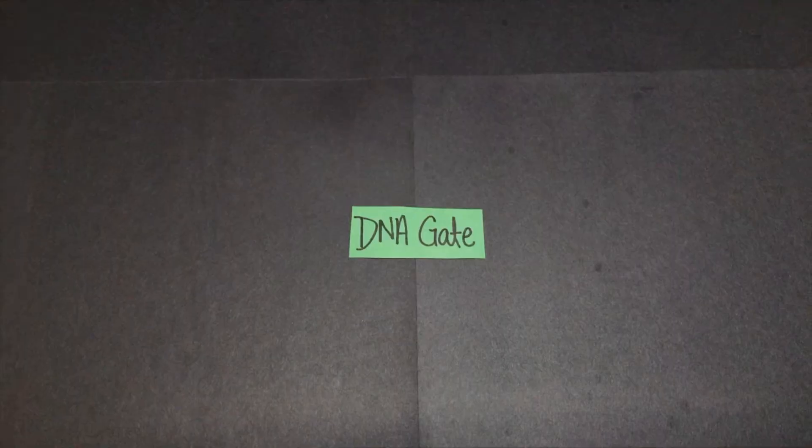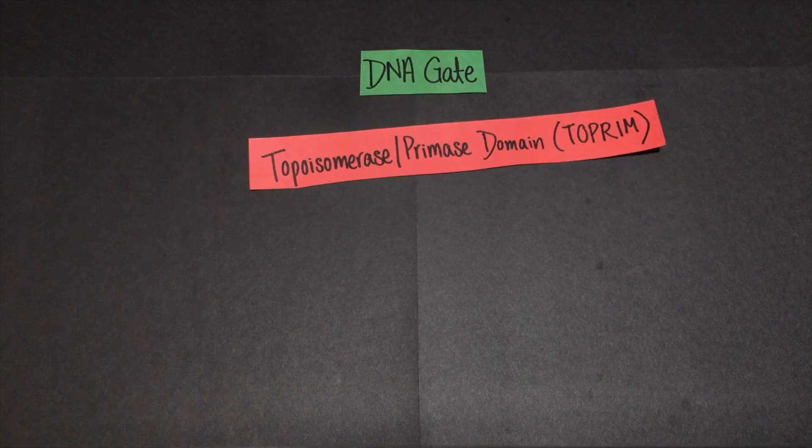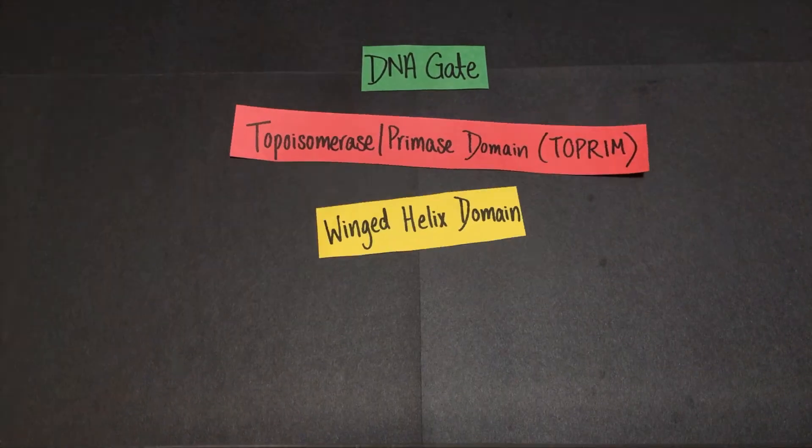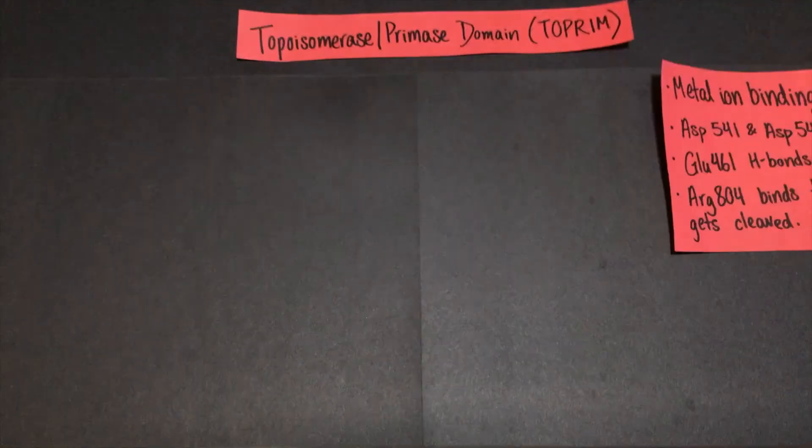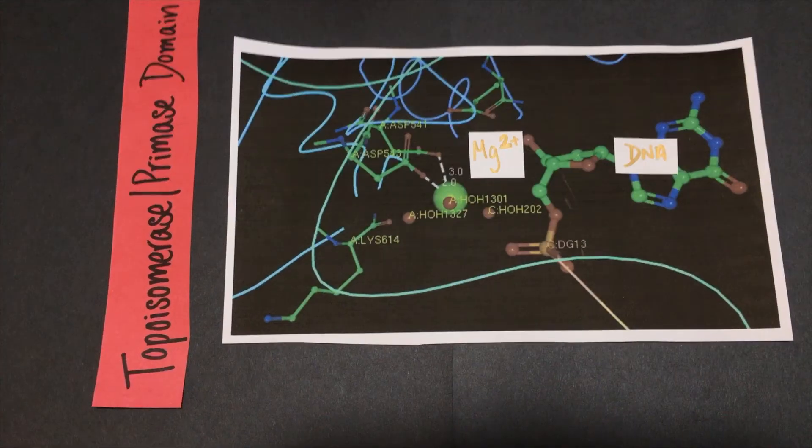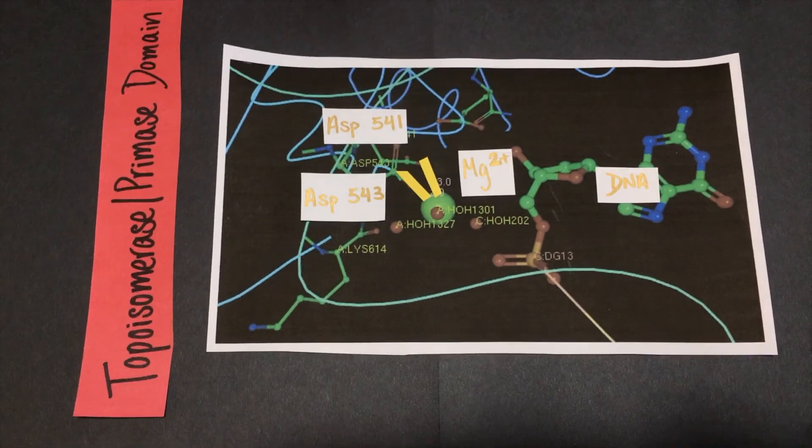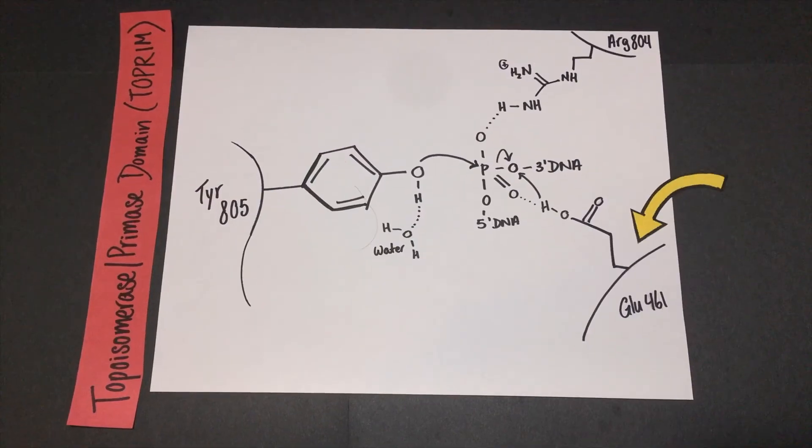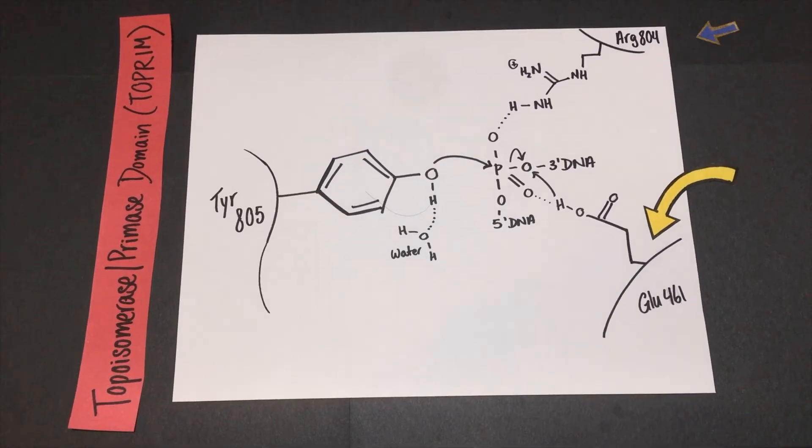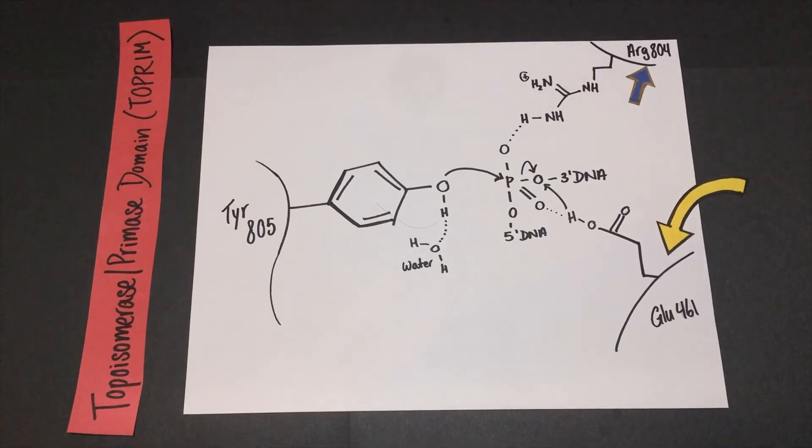Within the DNA gate, there are three important domains. The topoisomerase primase Top rim domain, the winged helix domain, and the tower domain. The topoisomerase primase domain is where metal ion binding occurs. Two aspartates at positions 541 and 543 coordinate a single magnesium 2+ ion in place. Glutamic acid 461 hydrogen bonds to the 3 prime OH strand, and arginine 804 binds to the phosphate of DNA that gets cleaved by tyrosine.